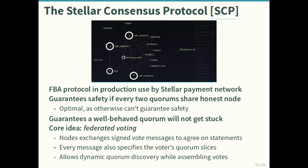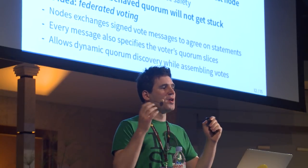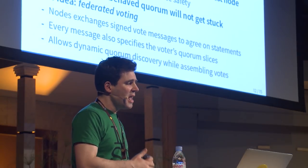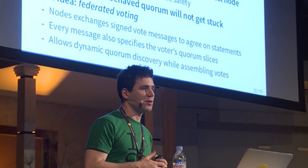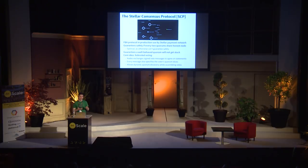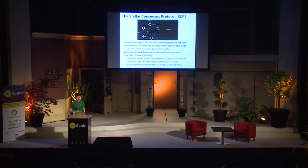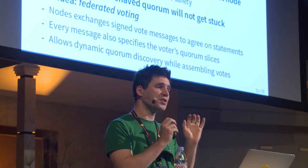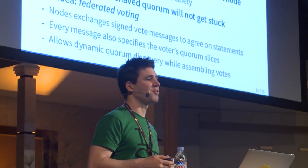I have a protocol construction for FBA called the Stellar Consensus Protocol, or SCP, which is in production use today on the Stellar payment network, coming to consensus about every five seconds across roughly 20 nodes. SCP guarantees safety if every two quorums share an honest node — which is optimal in the sense that if the protocol ever diverges, no protocol could have guaranteed safety. It also guarantees you won't get stuck as long as there's one well-behaving quorum, which is the best you can do given the fundamental impossibility result that a fault-tolerant safe consensus algorithm can't guarantee termination.